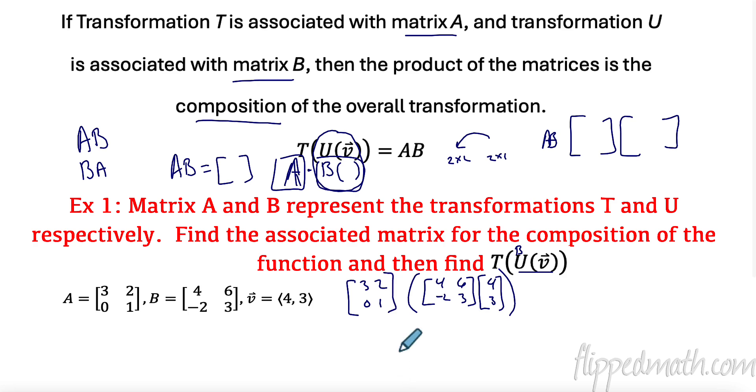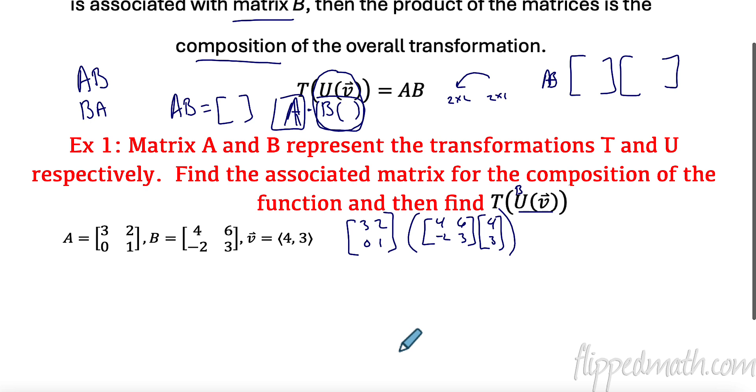Now, we want to know, what is the associated matrix? I can multiply these two things together right off the bat. 3, 2, 0, 1, A times B, 4, 6, negative 2, 3. I can multiply those things right off the bat and get an associated matrix that is the overall composition. So let's do that.